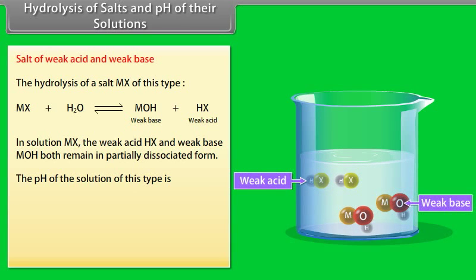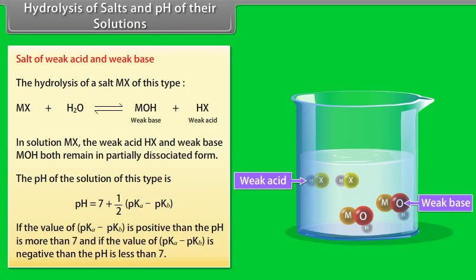The pH of a salt of weak acid and weak base is given by: pH = 7 + ½(pKa − pKb). If pKa − pKb is positive, the pH is more than 7; and if pKa − pKb is negative, then the pH is less than 7.